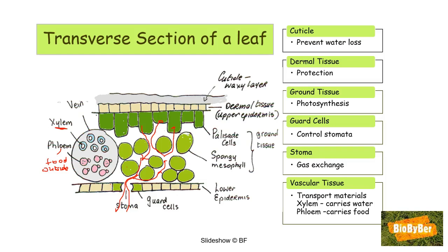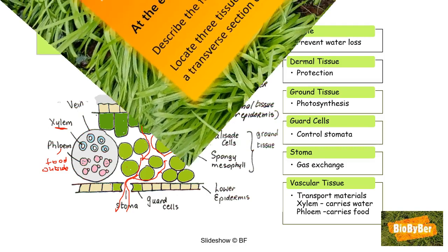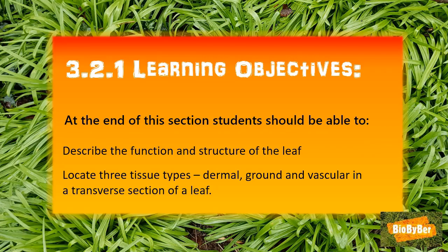To finish, you must be able to draw large, clear, well-labeled diagrams of these structures and know the functions of each part — practice in a jotter. Now that we've reached the end of the lesson, have we achieved our objectives? Can you describe the function and structure of the leaf? Can you locate the three tissue types — dermal, ground, and vascular — in a transverse section?